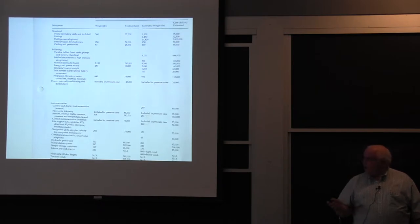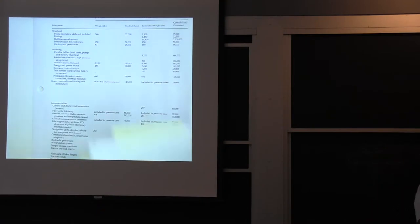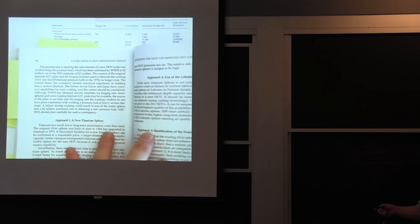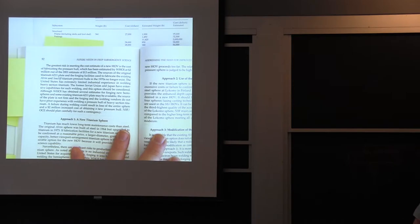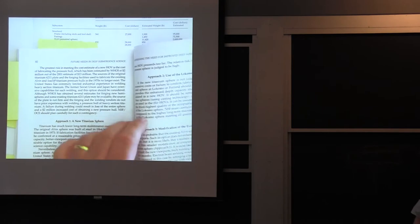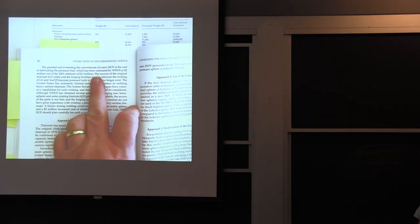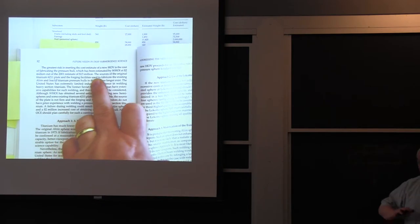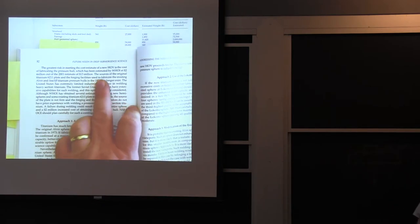I basically said the greatest risk in meeting the cost estimate of a new HOV is the cost of fabricating the pressure hull. Of all these things on here, the $2 million for the pressure hull was the biggest problem. Woods Hole had estimated $2 million in the 2001 estimate of $13 million. I had taken the $6.5 and I just doubled it to $13 million.